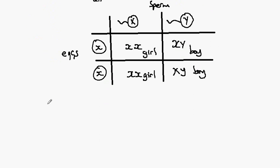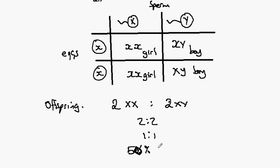So if we look at the offspring, we can see there's 2XX to 2XY. These are only probabilities. That's a 2 to 2 ratio, a 1 to 1 ratio, which means there's a 50% chance of being a girl and a 50% chance of being a boy.